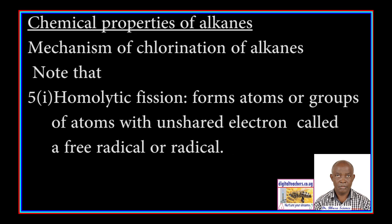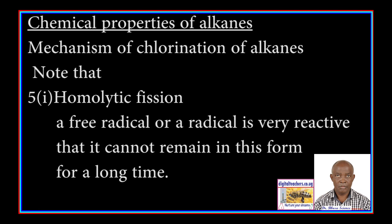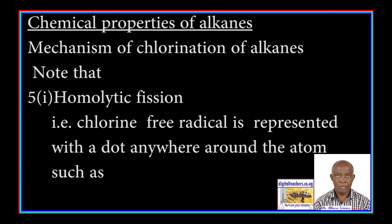Homolytic fission forms atoms or groups of atoms with unpaired electrons, called a free radical or simply a radical. A free radical is very reactive and cannot remain in that form for a very long time. A chlorine free radical is represented with a dot anywhere around the atom — for instance, Cl·